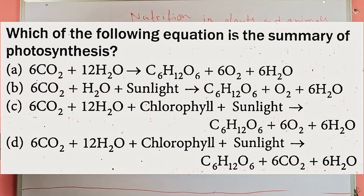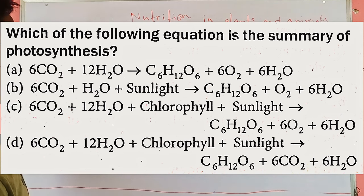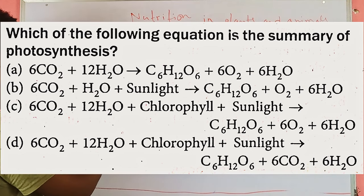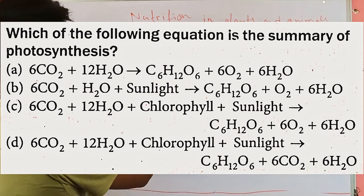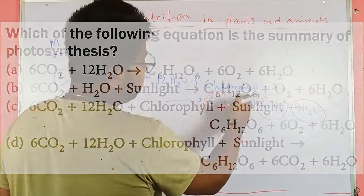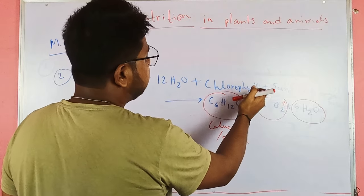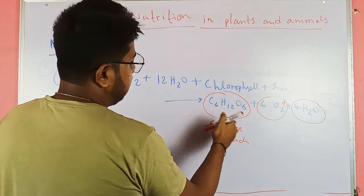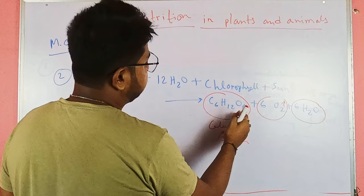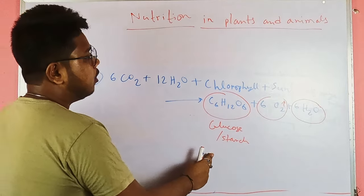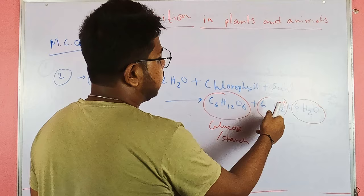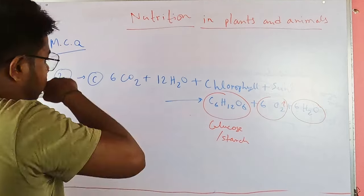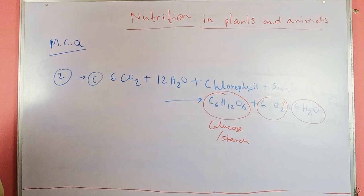The second question asks for the correct statement regarding photosynthesis. Option C is correct, where 6CO2 reacts with 12H2O along with chlorophyll and sunlight to produce the main product glucose (C6H12O6) along with emitting oxygen and producing 6H2O.